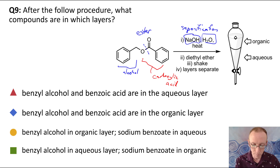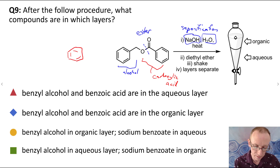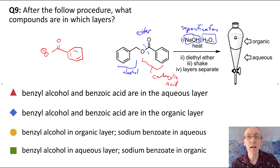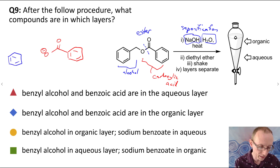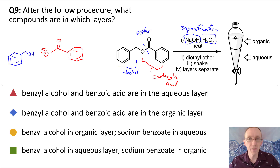So the two components are going to be: firstly, the carboxylate — that right-hand portion, as the conjugate base — and then the left-hand portion, which is going to be the alcohol. That's benzyl alcohol.